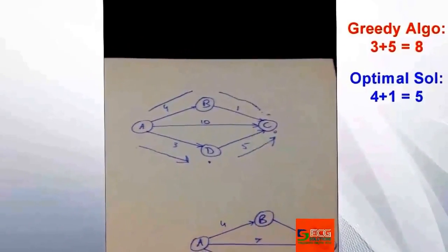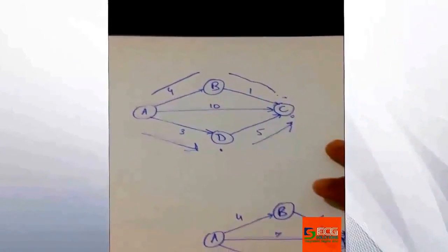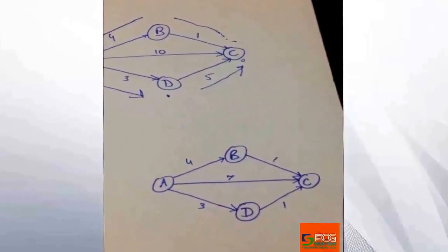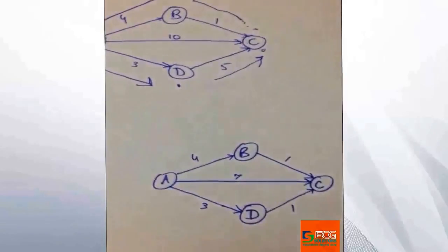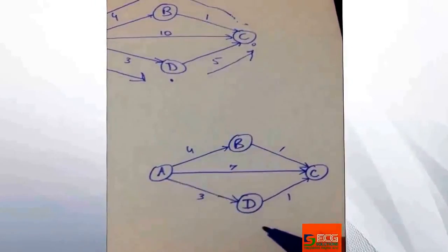So it is not necessary to say that greedy search algorithm will always fail. Let's take another example. We need to move from node A to C. In this case we move from A to D as this is the minimum distance from the perspective of greedy search algorithm.